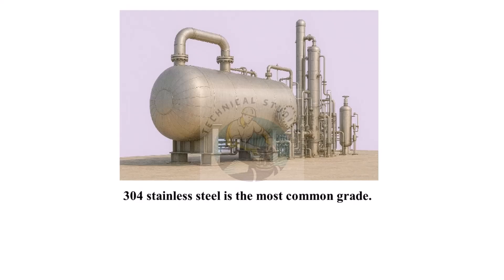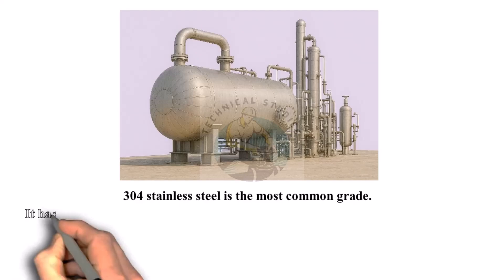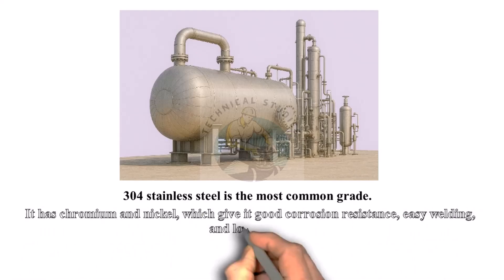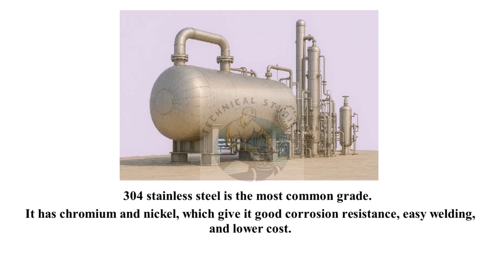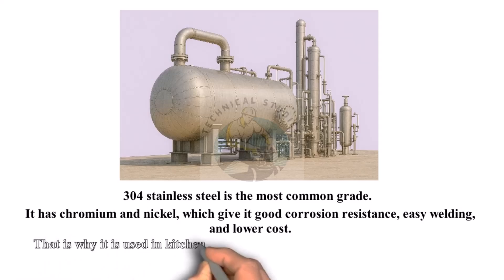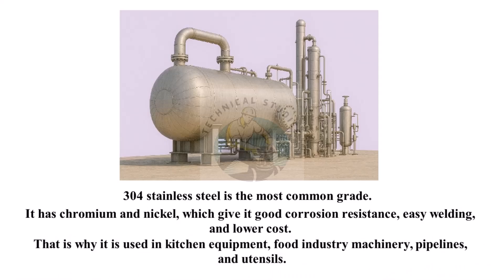304 stainless steel is the most common grade. It has chromium and nickel, which give it good corrosion resistance, easy welding, and lower cost. That is why it is used in kitchen equipment, food industry machinery, pipelines, and utensils.